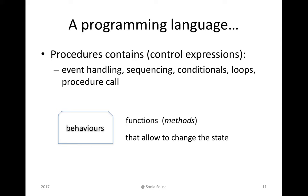In terms of procedures, procedures can contain controlled expressions — what the object can do, what we can make the object do. We can make event handlings, like when you click something, then execute something else. We can have a sequence of steps or conditionals: if this happens, then go to this part of the program. We can have loops — don't exit until you finish or get these values. This is what we call procedures, and every time we call a procedure it means something has to execute or act with a behavior.